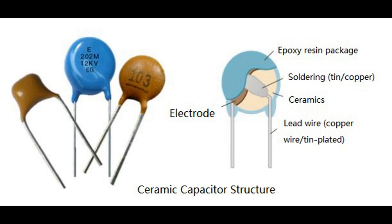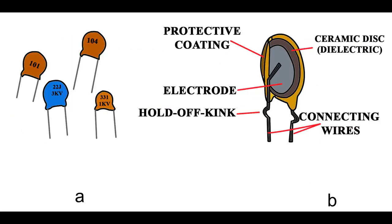The dielectric material can be made of various substances, such as ceramic, polymer film, electrolyte, or oxide layer, depending on the type of capacitor. In some capacitors, especially those with electrolyte-based dielectrics, a separator material is used to prevent direct contact between the electrodes. The separator enhances the capacitor's performance and prevents short circuits.